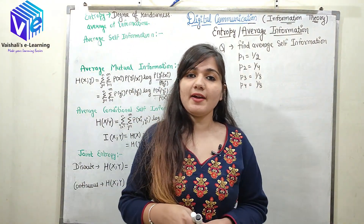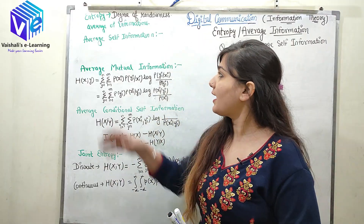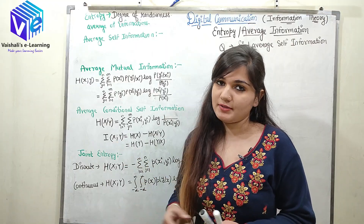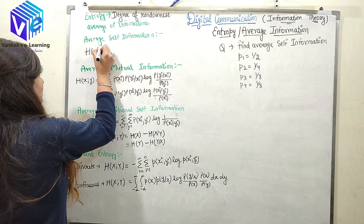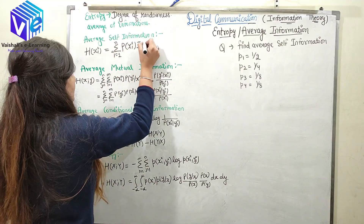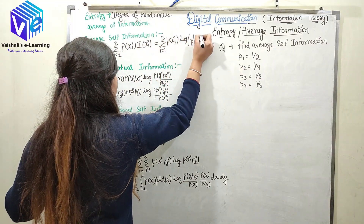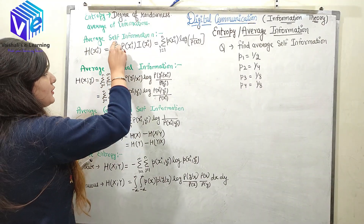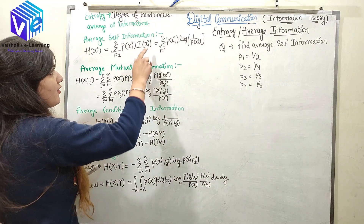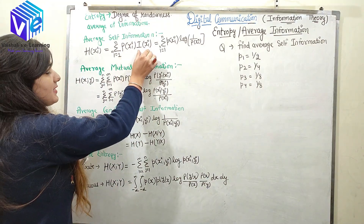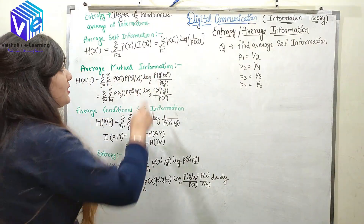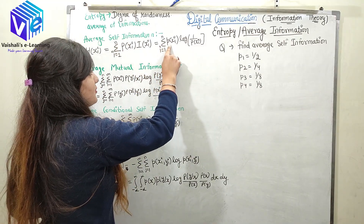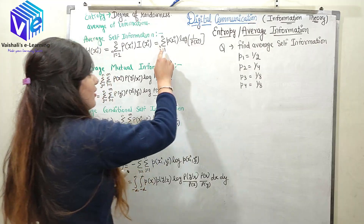So how do we calculate the average information, also called average self-information? We cannot simply average them as i1, i2, i3 divided by n. The formula is: average self-information equals the summation from i=1 to n of probability multiplied by information, where information is log(1/p). So it becomes the summation of p·log(1/p) from 1 to n.